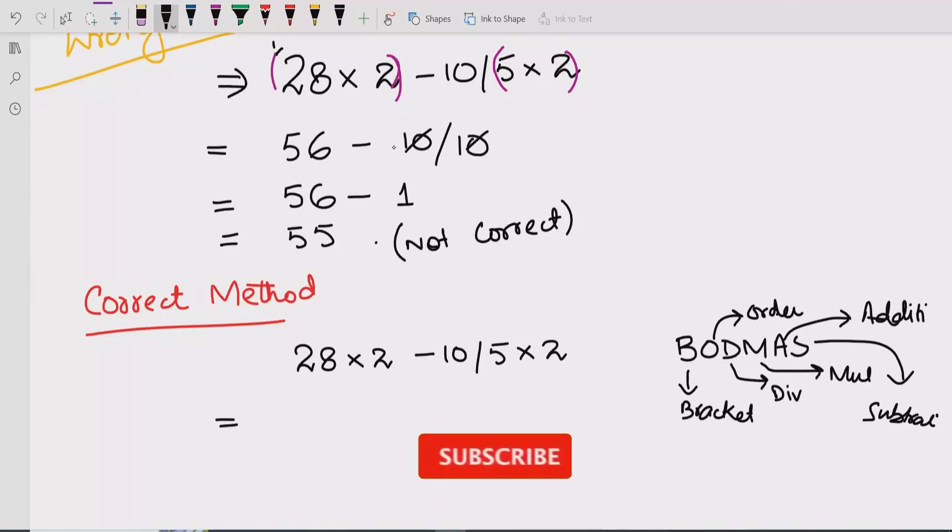If we see the BODMAS method, first we will go from left to right. First we will multiply 28 multiplied by 2 which is 56, minus. Now 10 upon 5, first we will solve this one, and after that we will multiply. According to BODMAS method, first we will divide.